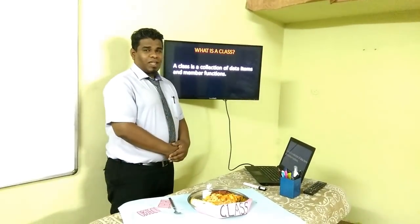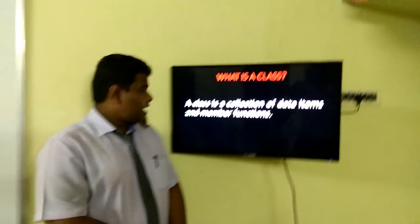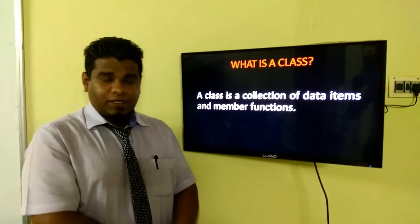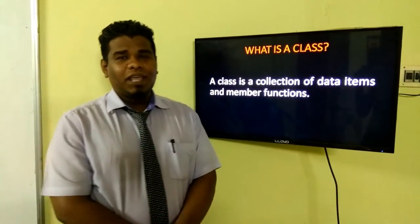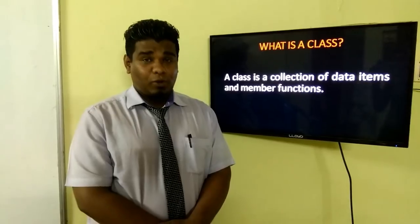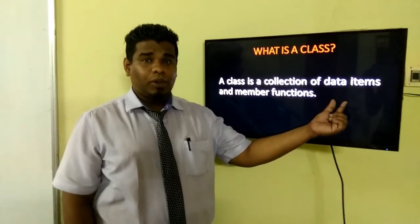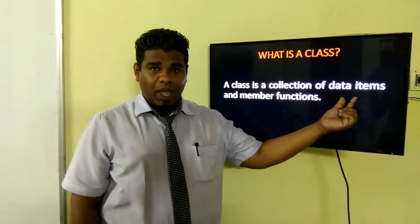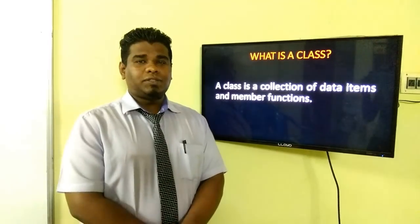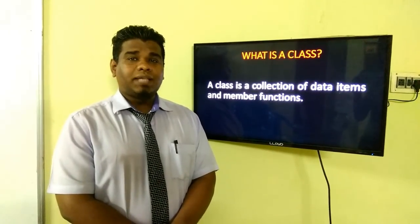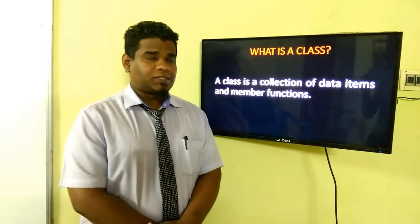What is a class? A class is a collection of data items — that is nothing but variables — and member functions, that is nothing but a function. A variable has a value and an address. Every variable must have a value as well as an address. A function consists of a set of instructions to be executed for a specific task.